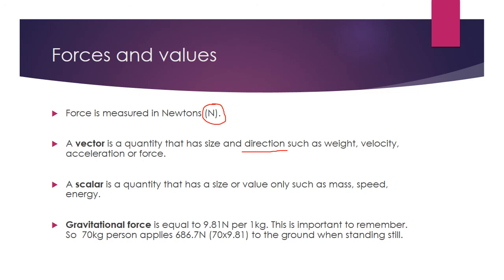The last point is gravitational force. This is really important for exam questions. You could occasionally get asked a three mark question on this. So gravity has a force of 9.81 Newtons per one kilogram of weight. So it's important to remember that if we are trying to work out what a 70 kilogram person applies to the ground when standing still, we times 70 kilos, the weight of the person, by 9.81 Newtons. And that would give us 686.7 Newtons of force being applied to the Earth when standing still.